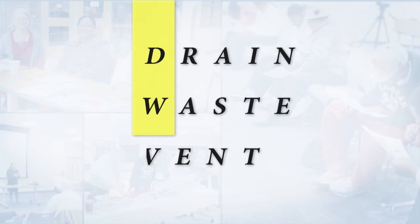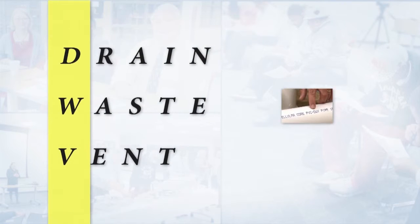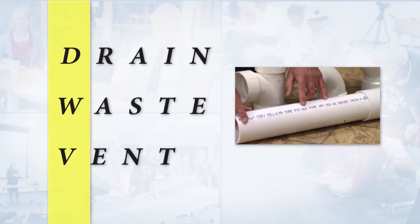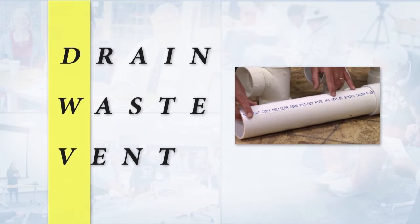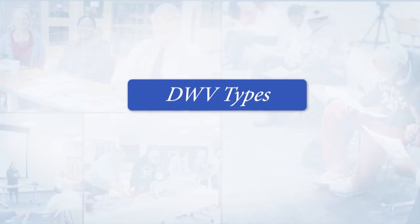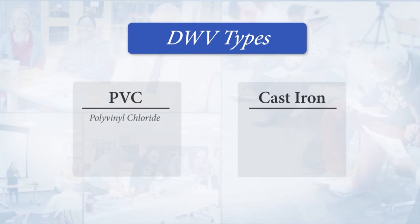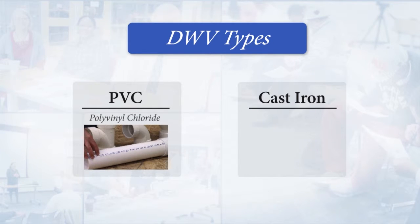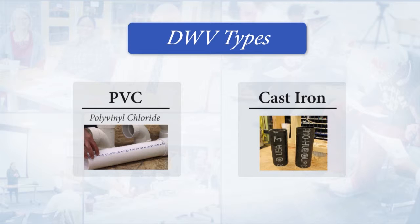First of all, we need to recap a little bit. The drain waste vent is the DWV, and you'll see that stamped on most of your waste and soil piping. There are two main types used in the industry: PVC, which is polyvinyl chloride — that's a thick-walled plastic pipe — and cast iron, which is used mainly in commercial settings for all of their drain waste and venting systems.